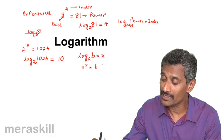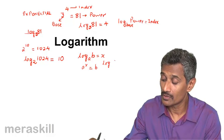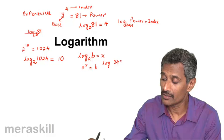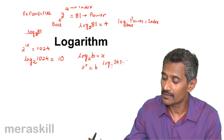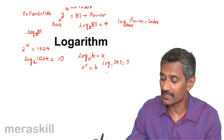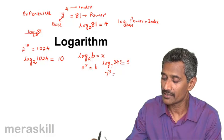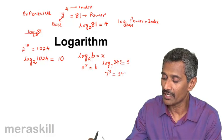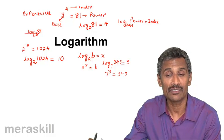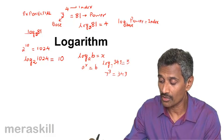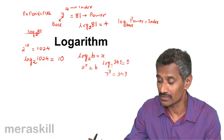For example, log₇343 = 3. This means that 7³ = 343. So log₇343 = 3.